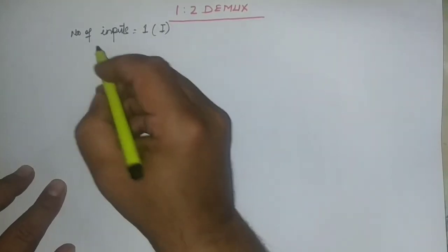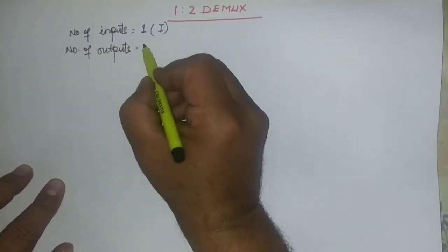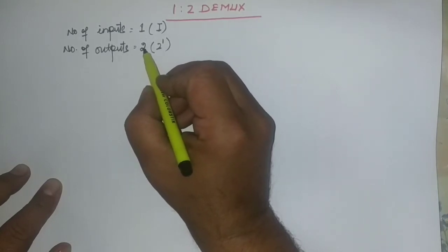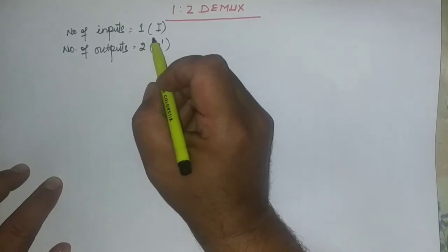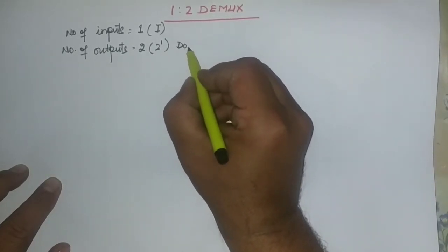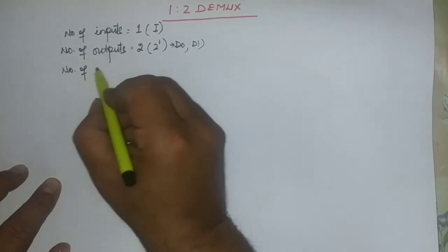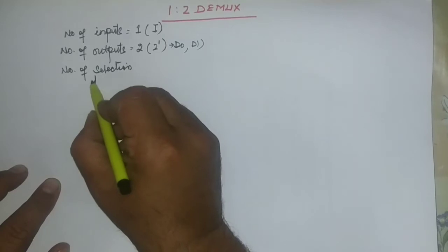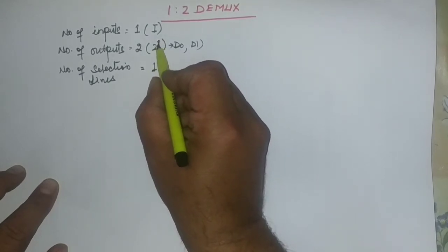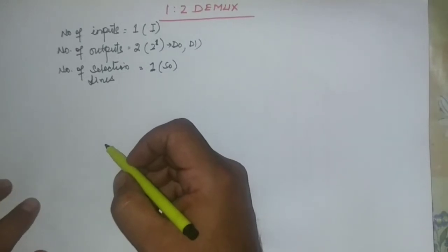The input is denoted as i. The number of outputs here is 2, which means 2 raised to the power 1. As discussed in the definition of the demultiplexer, it has a maximum of 2 raised to the power n outputs. So 2 outputs are named D0 and D1.